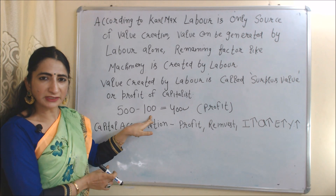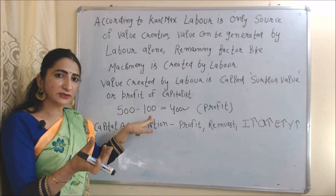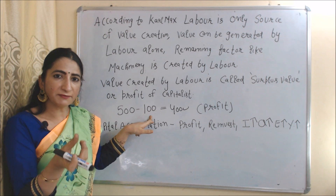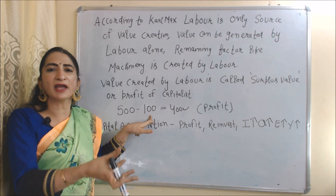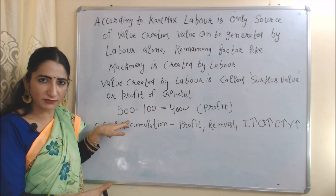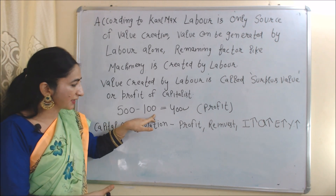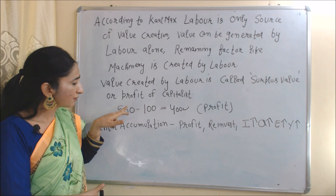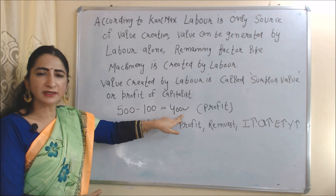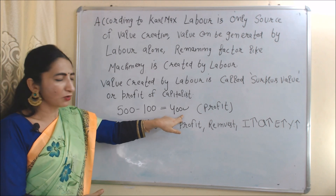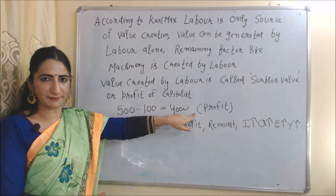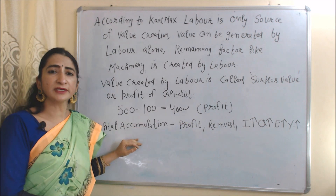In this theory, we assume we pay wages to labor at subsistence level — only enough to survive. The total value produced by labor is 500, but we pay wages equal to 100. So 500 minus 100 equals 400. This 400 will be called surplus value, or we can say this 400 will be called the profit of the capitalist.